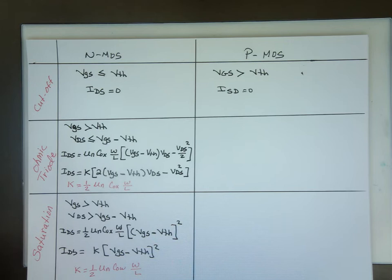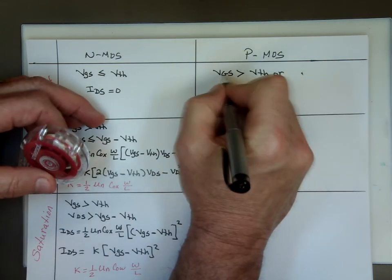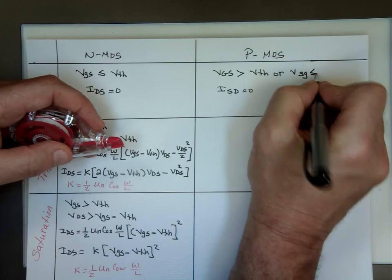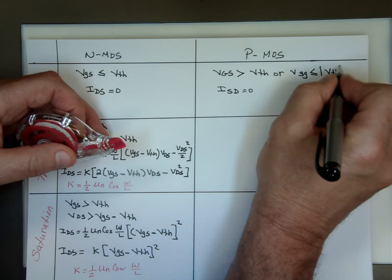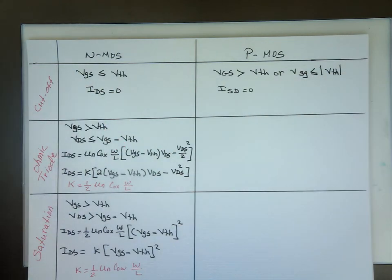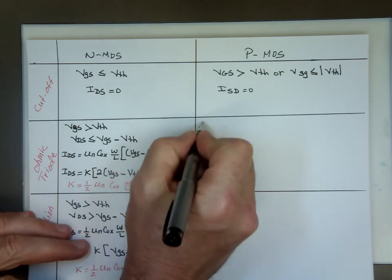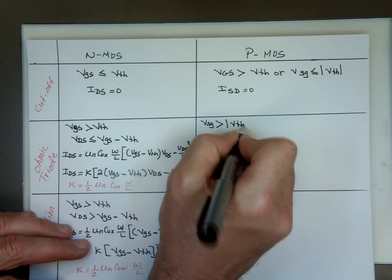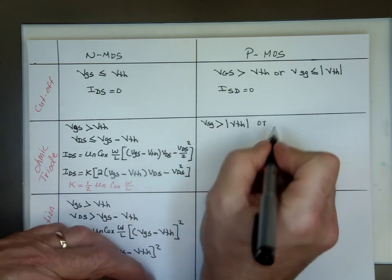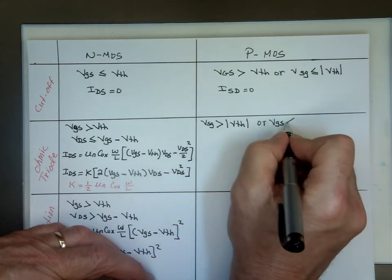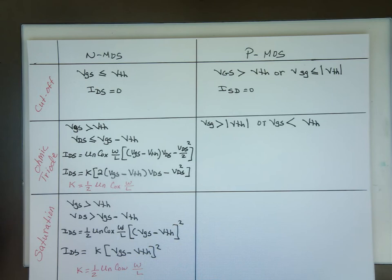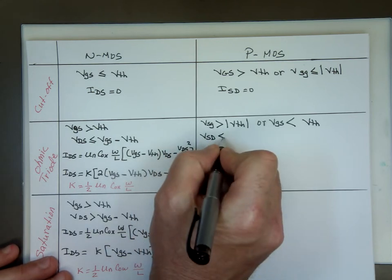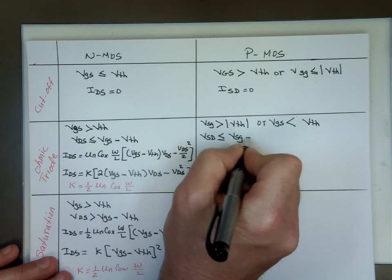So if you want to, a lot of times actually we write that, instead of VGS we go VSG, instead of GS is less than or equal to the absolute value of V threshold. That's the same thing. When you're in this mode you will say VSG greater than the absolute value of V threshold, or you can say VGS is less than V threshold.